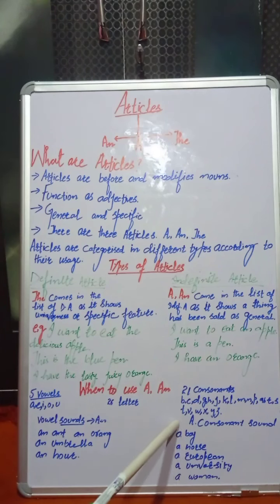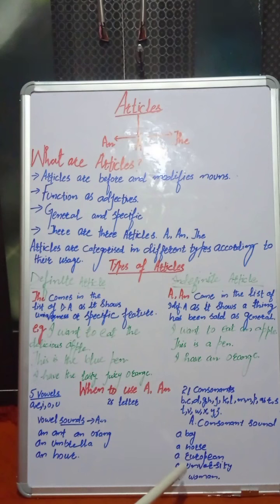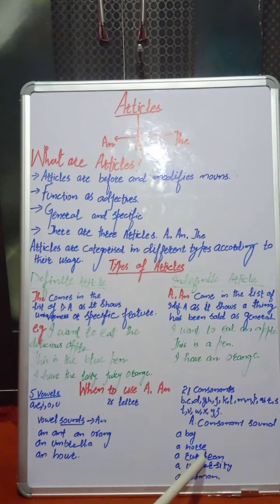'A' is used for consonant sounds. Examples: a boy, a horse, a European, a university, a woman. Here, even though 'European' and 'university' start with a vowel letter, the sound is different — the sound comes from a consonant. 'European' starts with a 'yuh' sound, 'university' also starts with 'yuh.' So we say 'a European,' not 'an European,' and 'a university,' not 'an university.'